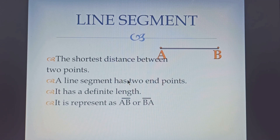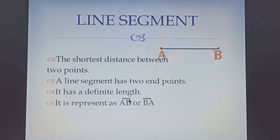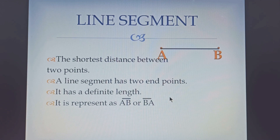A line segment is represented as AB with a line drawn on top of AB. This shows that AB is a line segment. We can also write this line segment as BA, and here also on top of BA there is a line which shows that it is a line segment. So we can represent a line segment either way — as AB or as BA.